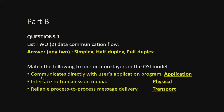Next, match the following to one or more layers in the OSI model. First: 'communicates directly with the user application' — the keyword is user application, so this is the Application Layer. Second: 'interface to transmission media' — this refers to physical hardware (wired or wireless), so this is the Physical Layer. Third: 'reliable process-to-process message delivery' — this is the Transport Layer.